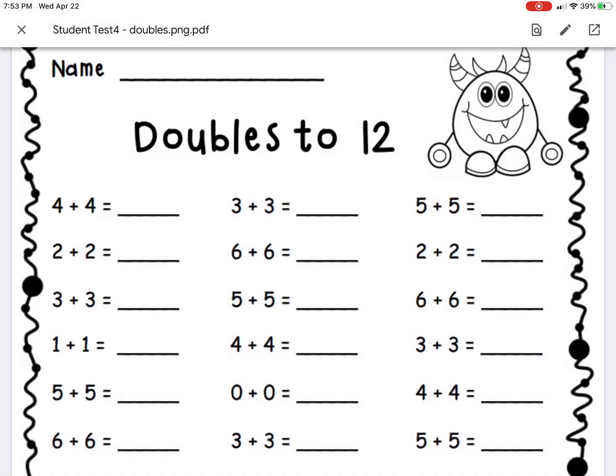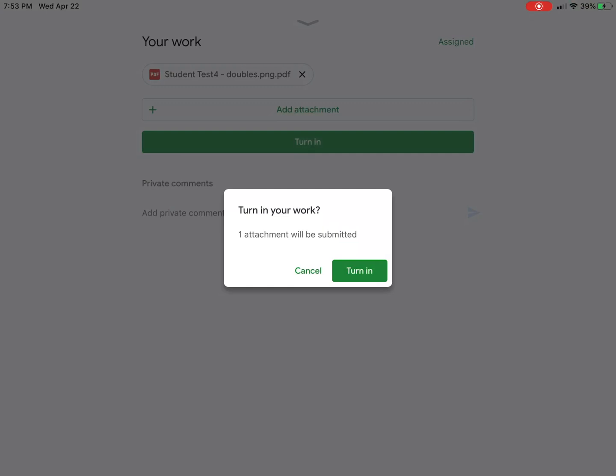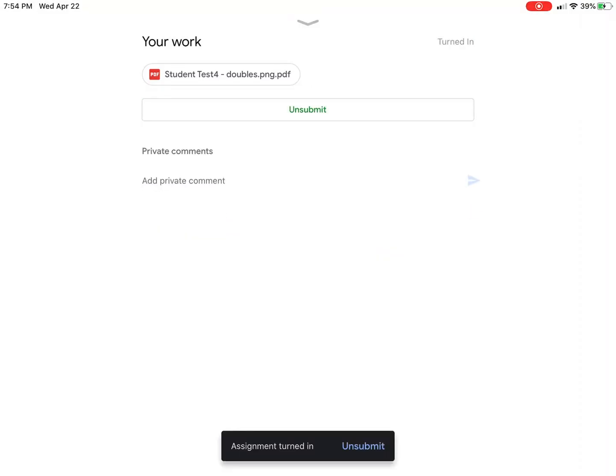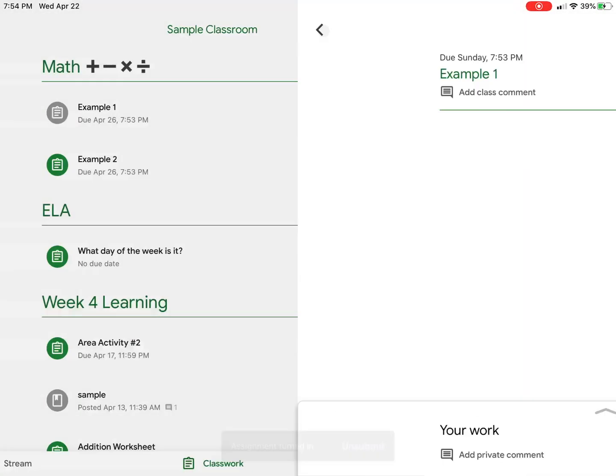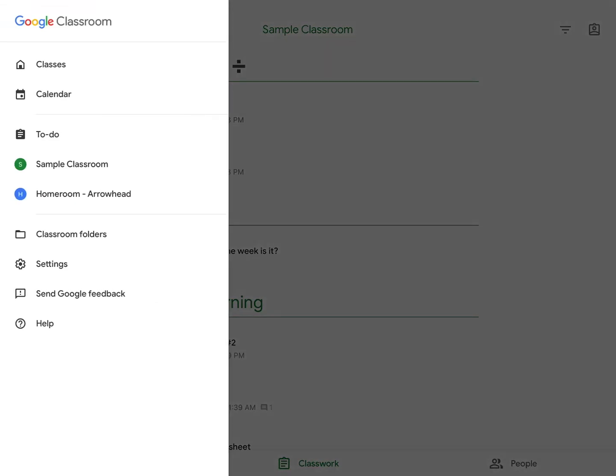In the upper left select done and then select the X in the upper left and select turn in and turn in again. Now it has been submitted and you can go back and see that it is grayed out meaning that it has been submitted.